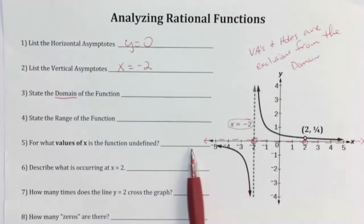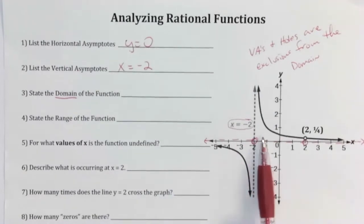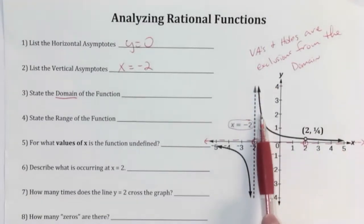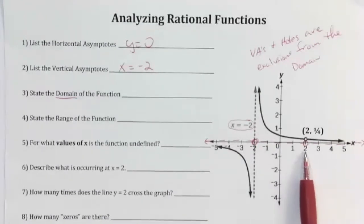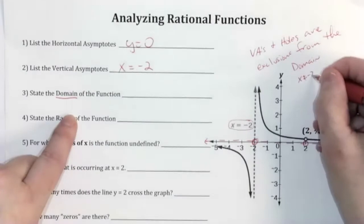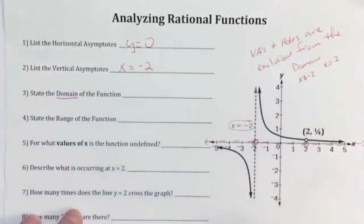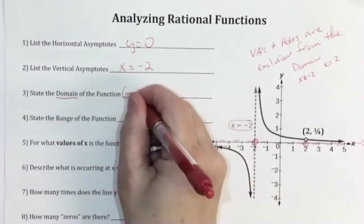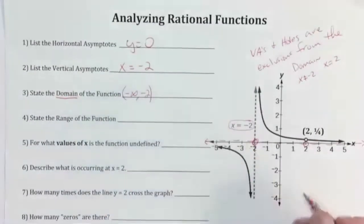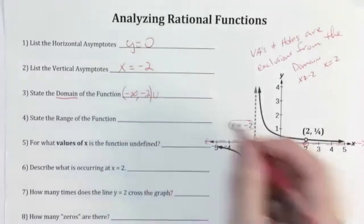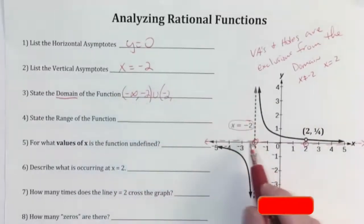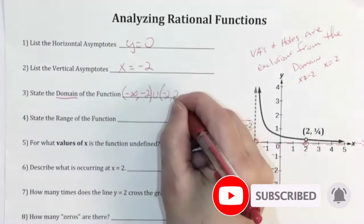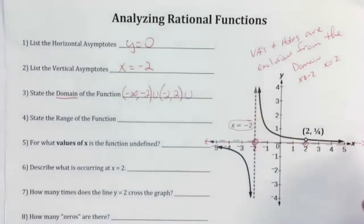Going left to right, every x-value is included from negative infinity up to negative two — we skip over negative two because of the vertical asymptote. Then every value to the right of negative two is included except for the value at two because of the open dot, or hole, there. So we have two exclusions: x cannot equal negative two, x cannot equal two. In interval notation that's negative infinity to negative two, union negative two to two, union two to infinity.